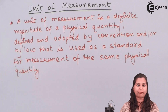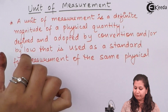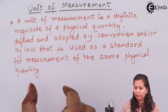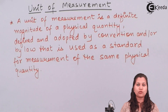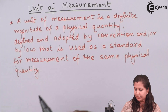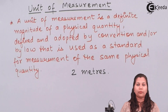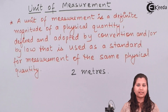If we technically define the unit of measurement, it is the definite magnitude of a physical quantity defined and adopted by convention or by law, that is used as a standard for measurement of the same physical quantity. For example, when we are doing the measurement of length and we want to find the length of a paper, we express the length as two meters. So the distance between two objects is two meters, and this is the result of the measurement.